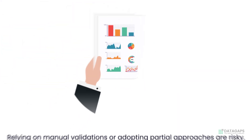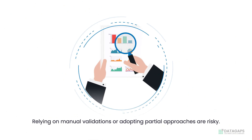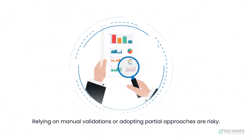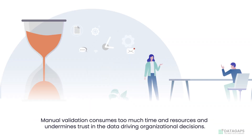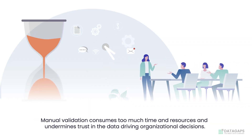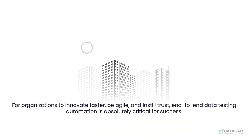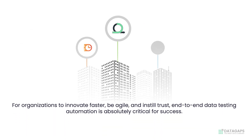Amidst these challenges, resorting to manual validations or adopting partial approaches is a perilous endeavor. Such methods not only consume exorbitant time and resources, but also engender mistrust in the very data that drives organizational decisions. For organizations to innovate faster, be agile, and instill trust, end-to-end testing automation is absolutely critical for success.